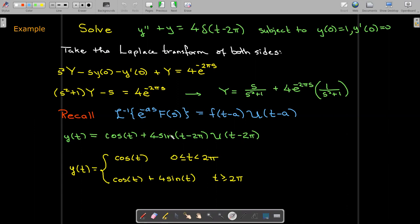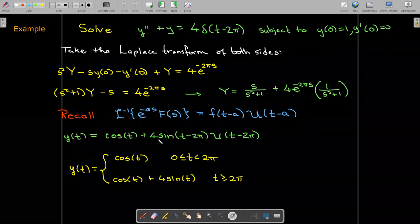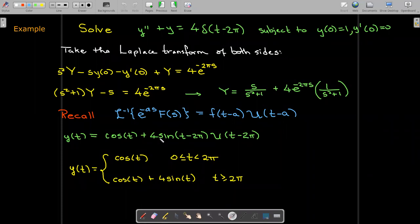And so before t equals 2π, you just have a nice cosine function. You can think of that as indeed that is the solution to the homogeneous equation. So that would be your complementary function. But then at t equals 2π, this other function, this 4 sine of t function, gets added in to the response function.